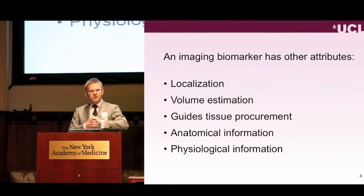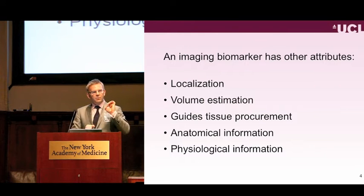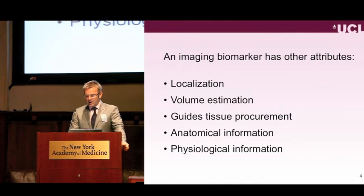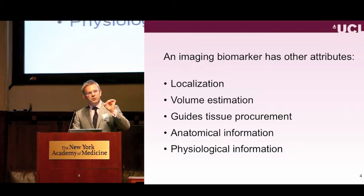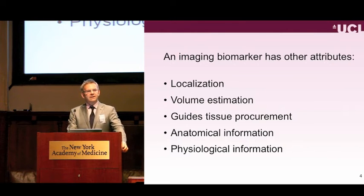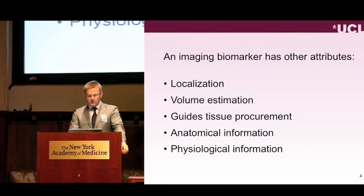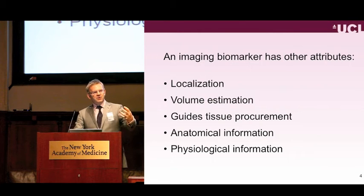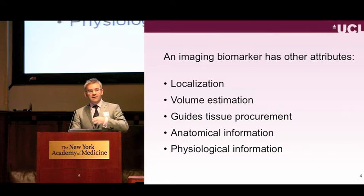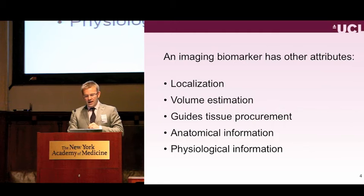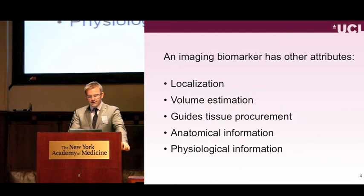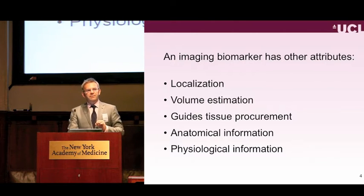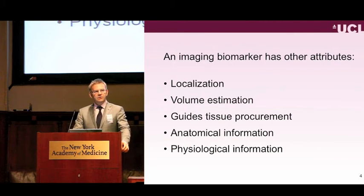An imaging biomarker can give us information on localization, which a serum biomarker will never do. It can estimate volume—as we just heard from Peter Carroll's talk—and volume is something we've not incorporated into our TNM classification of prostate cancer, probably the only solid organ cancer where we don't incorporate volume. Once you have localization and volume you can guide tissue procurement: if we can accurately put our needle into the heart of the tumor we get representative tissue that gives us most of the story. We also get anatomical information—tumor location at the apex versus the base, capsular involvement, transition zone—all key information not available in a serum biomarker. There may also be physiological information giving us insight into the biodynamics of the tumor.